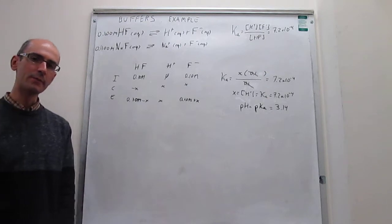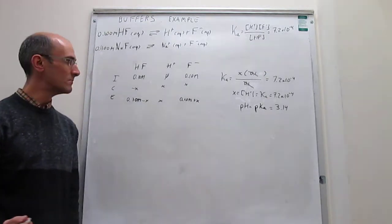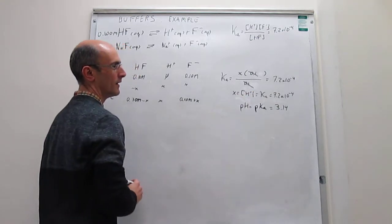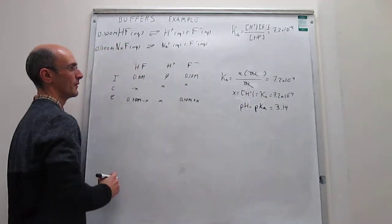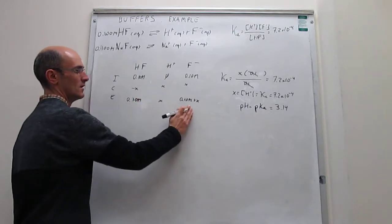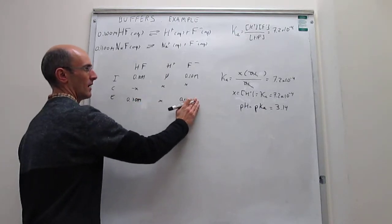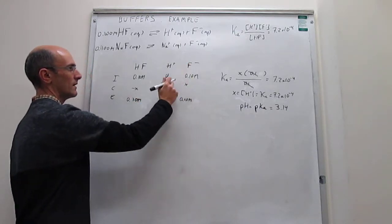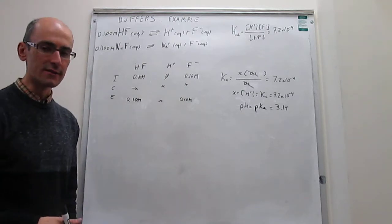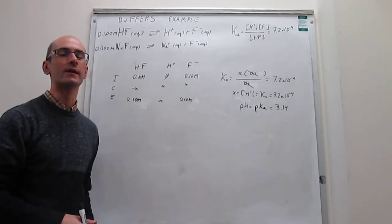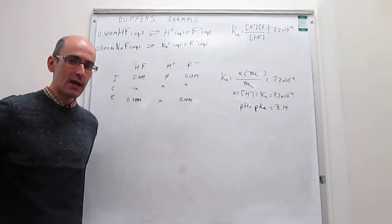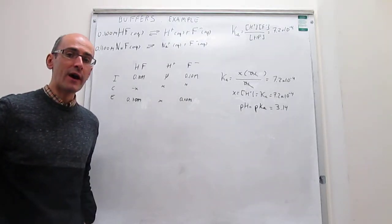So pH 3.14 will be the pH of our buffer solution. Notice that at equilibrium, the level of protons is so small that for all intents and purposes, your concentrations of the conjugate base and of the weak acid at equilibrium are identical to the initial ones — something we have demonstrated in a prior video. Now let's try to see how the buffer action works.